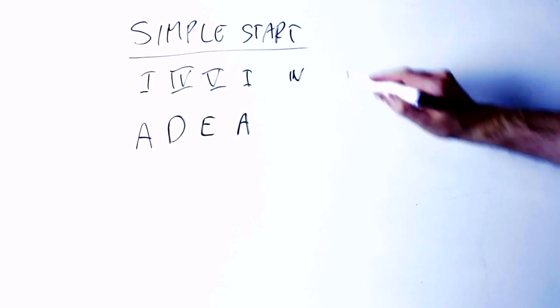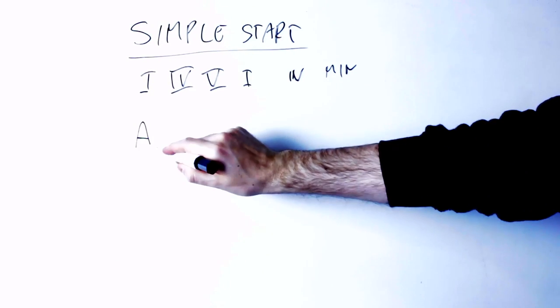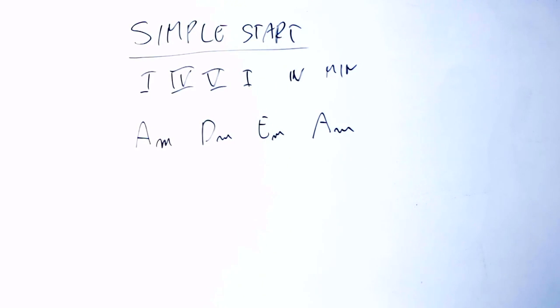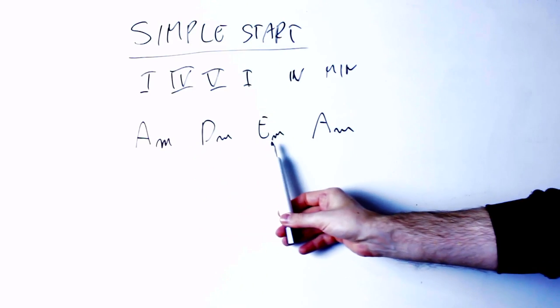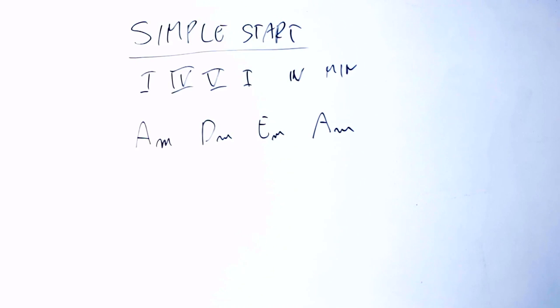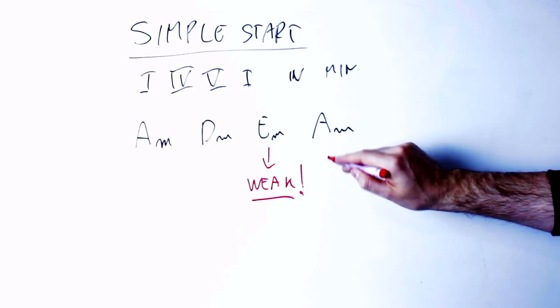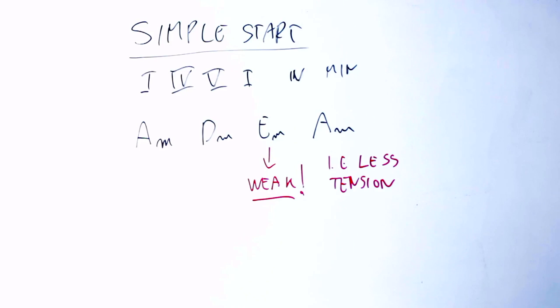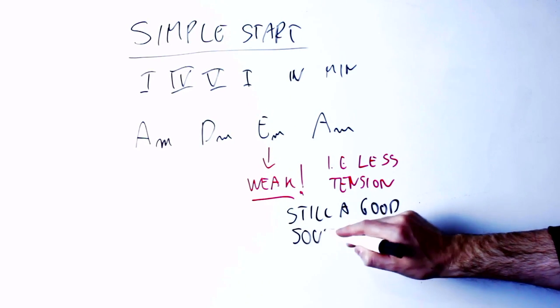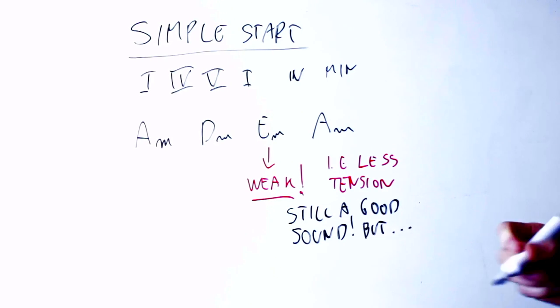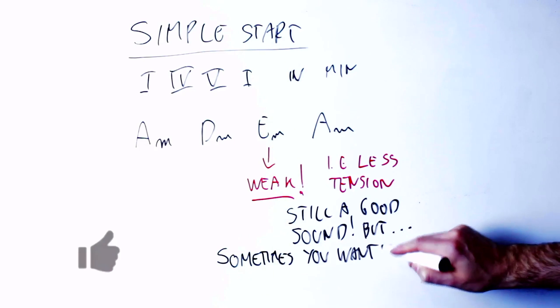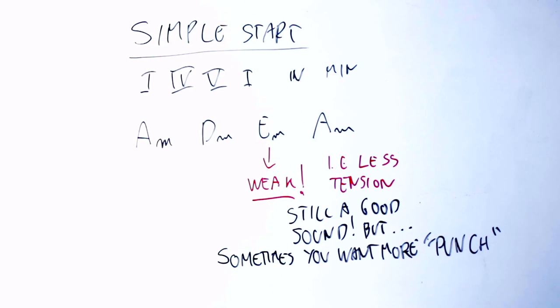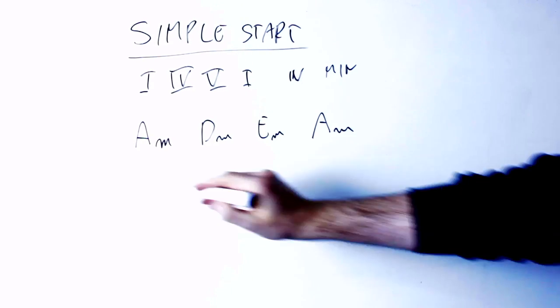Now let's do the exact same thing in the A minor key. So again, I'll have a 1-4-5-1 chord progression and in natural minor my chords are A minor, D minor, E minor and A minor. The first thing you notice is that there is much less tension on the V chord, the E minor in this case. This is cool if this is the sound you want. It's not that this sound is illegal or not legit. But sometimes you do want a bit more punch to your chord progression.